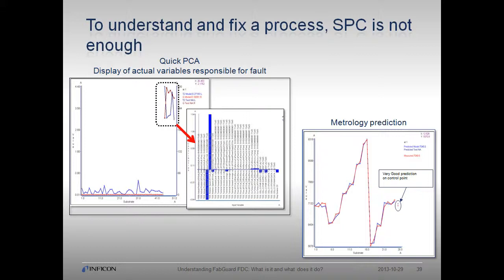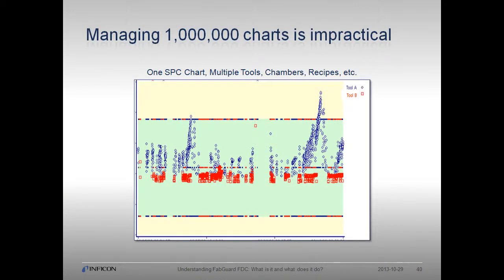Using a PCA model, we can drill down to variable contributions for out-of-control data to determine what part of the tool contributed to the fault condition. Additionally, we can create a metrology model that predicts measurement based on process data and then compare the prediction to the actual value. FabGuard also allows a report to be created for multiple tool-chamber-recipe combinations, consolidating many reports into a single report with independent execution.